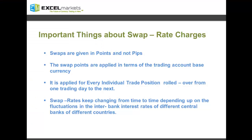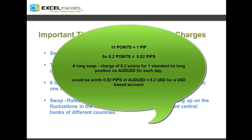There are a few important things to consider about swap rate charges. Firstly, the swap charges are given in points and not in pips on your MT4 platform. However, since each pip is worth 10 points, you can do the conversion for calculation purposes. These swap points are applied in terms of your trading account's base currency, depending upon the size of your trade position. So for example, a long swap of 8.2 points on the Aussie dollar for a one standard lot position would be worth 0.82 pips equivalent of your account base currency — for a USD-based account, this would be equal to 8.2 US dollars.